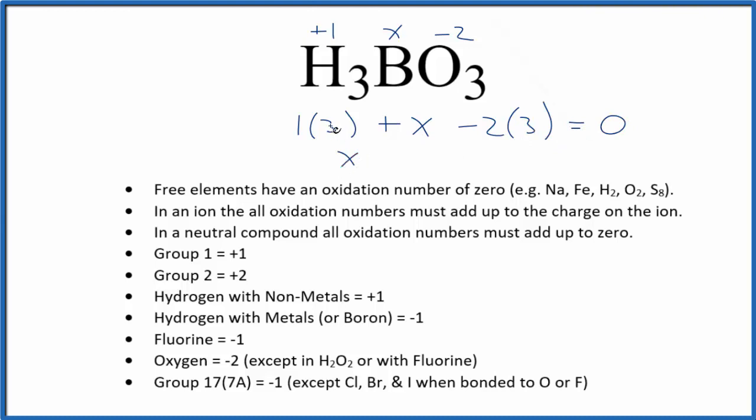So we have X, three, and negative six. That's a negative three equals zero. So X will equal a positive three. The oxidation number here for B, the boron in H3BO3, that's going to be a positive three.